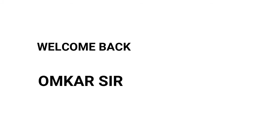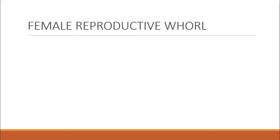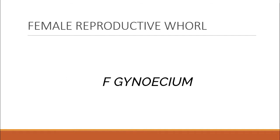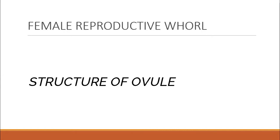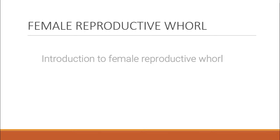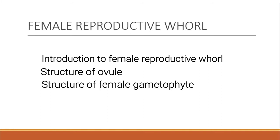Welcome back students, this is Ankar sir again from Biology Lectures. Today we will be starting with a very important topic: introduction to the female reproductive world, which includes the structure of gynoecium, that is the individual member called carpel or pistil, the details of the structure of the ovule, and the development of the female gametophyte. So today's lecture covers three things: introduction to the female reproductive world, structure of ovule, and development of female gametophyte.